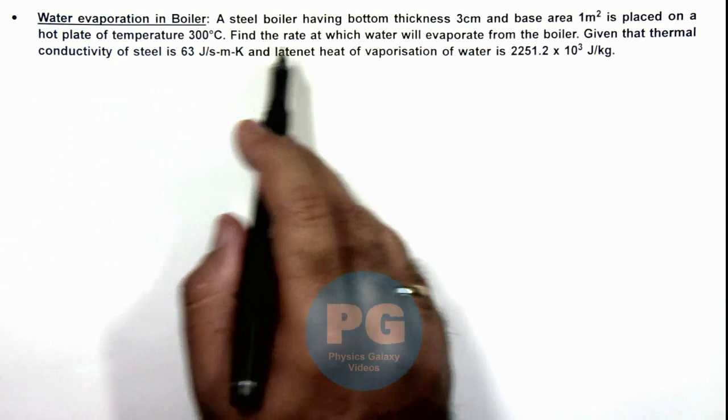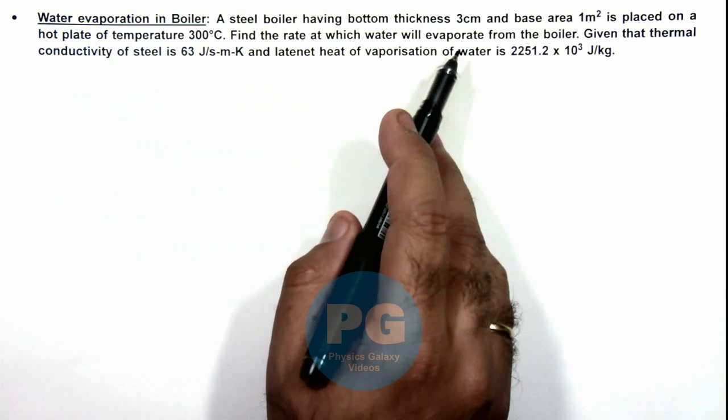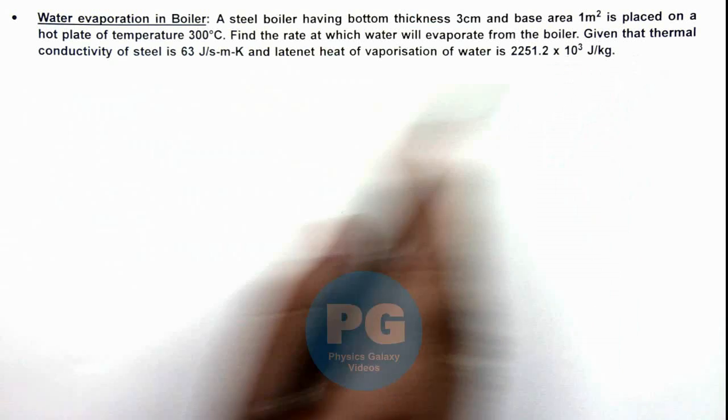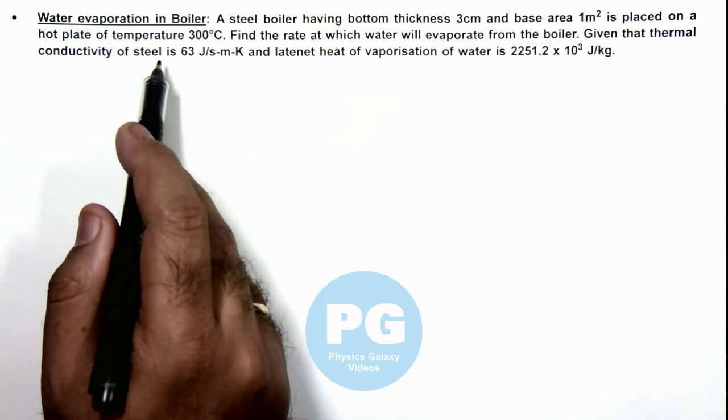We are given that a steel boiler having bottom thickness 3 centimeter and base area 1 meter square is placed on a hot plate of temperature 300 degree centigrade.